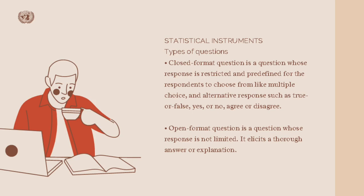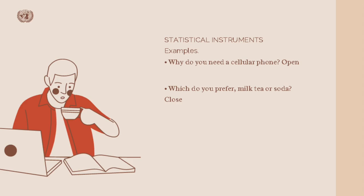Statistical instrument types of questions: an open question is one whose response is not limited — it elicits a thorough answer or explanation. Examples of open questions include: 'Why do you need a cellular phone?' and 'Which part of the event did you like the most?' For closed questions, examples include: 'Which do you prefer, milk tea or soda?', 'Is calamansi a vegetable?', and 'On a scale of 1 to 5, how satisfied are you with the product?'